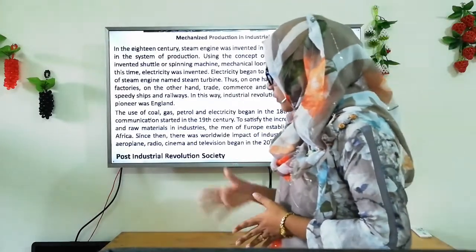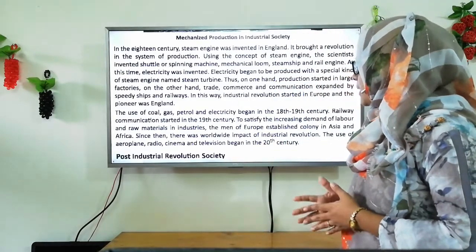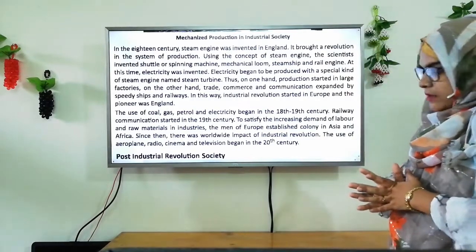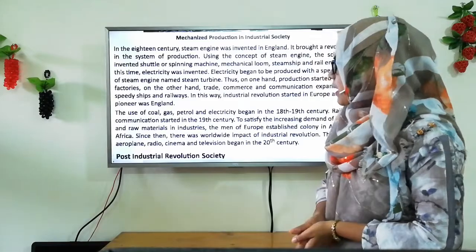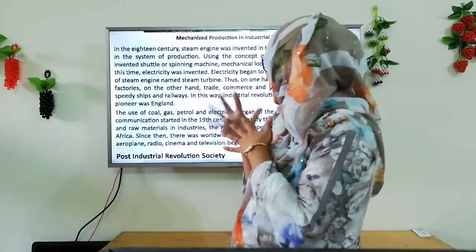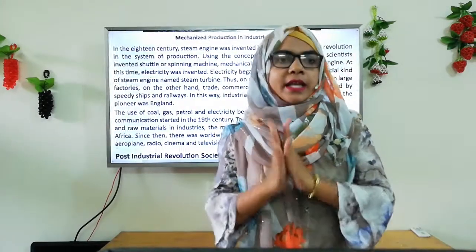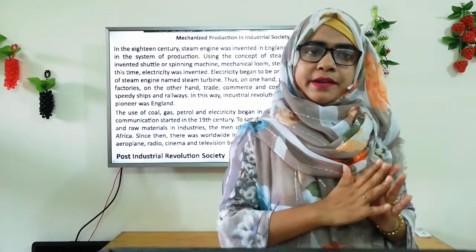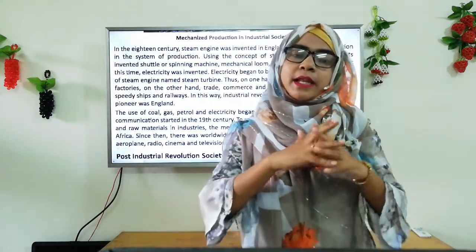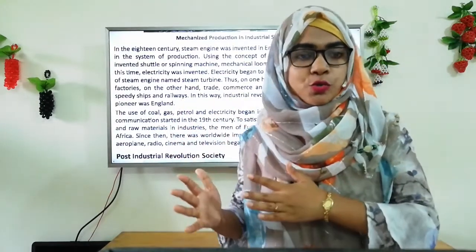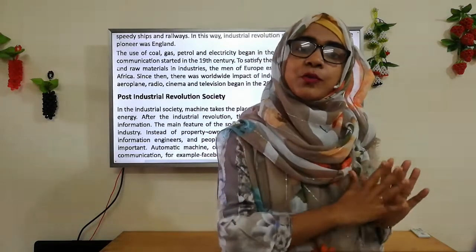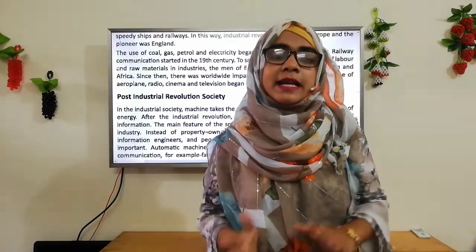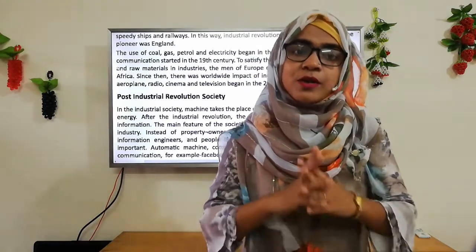The use of aeroplane, radio, cinema, and television began in the 20th century. At the end of our study of agrarian and industrial society, we learn that agricultural production relied primarily upon human and animal laborers as opposed to mechanized tools. For example, a farmer in an agrarian society is likely to plow a field with a plow powered by a horse, oxen, or even just himself. On the other hand, an industrial society would utilize a tractor to till the field.